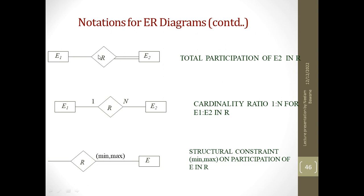This indicates partial participation and total participation. For cardinality ratio, I specify one on this side and n on the other side. The structural constraint is defined using min..max notation.